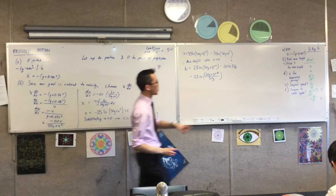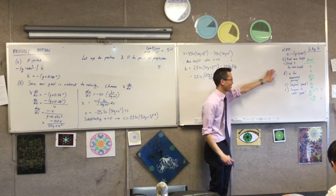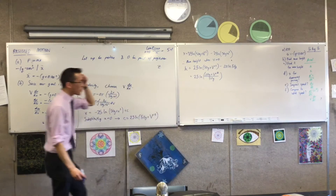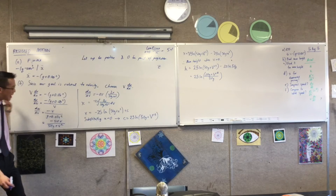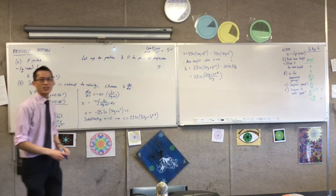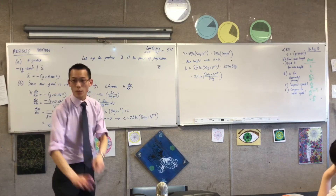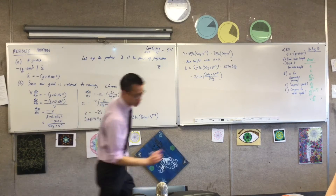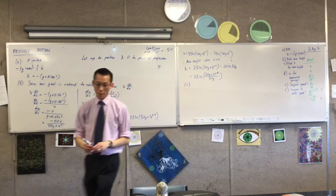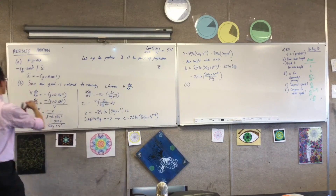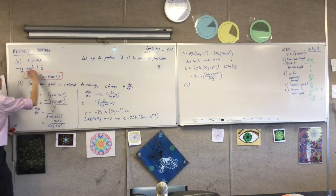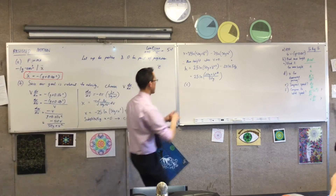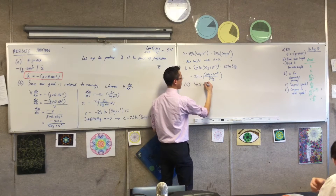We're going to accelerate a little bit. Find the time for the maximum height — I literally do mean that. What am I going to do with this? I don't have any time anywhere in these equations. So I'm going to rewind. We're not going to go through the algebra here, but I'm just going to write my first line for you. This is for part C. I'm going to come back to this, because now I've got a different goal. Since our goal is related to time...